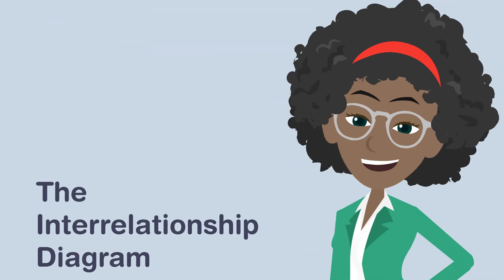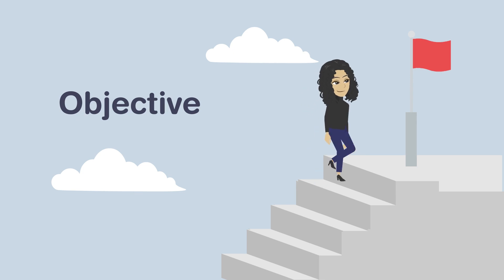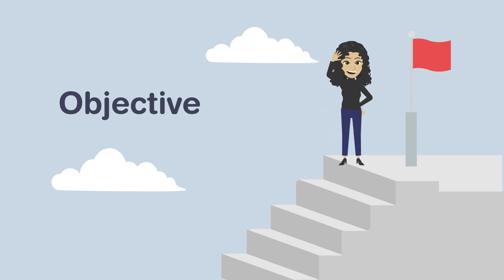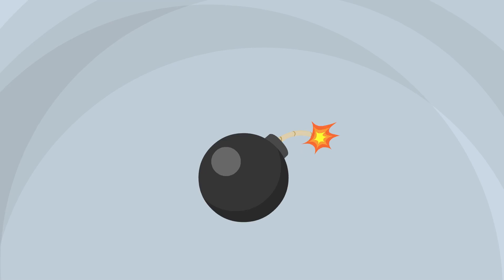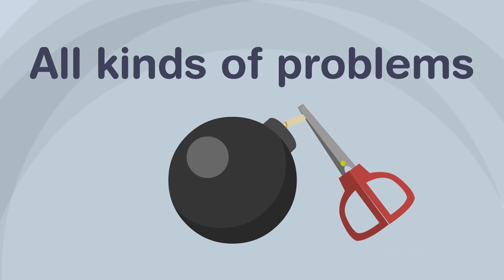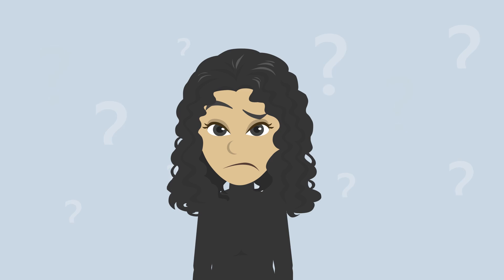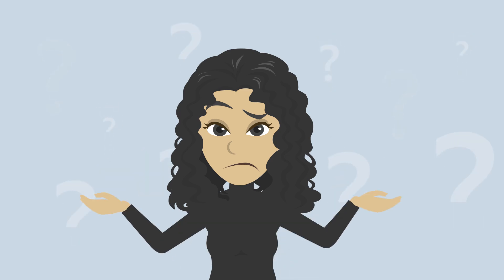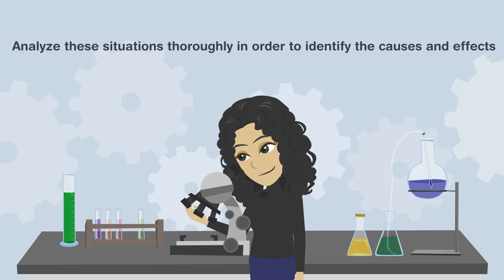In this week's training minute, we will discuss the interrelationship diagram. The objective is to recognize how to detect the reasons for a problem using an interrelationship diagram. At work, one sometimes has to deal with a variety of personalities and unique situations. This can lead to all kinds of problems. For some complex issues, the causes can be multiple and difficult to determine. It is important to analyze these situations thoroughly in order to identify the causes and effects.